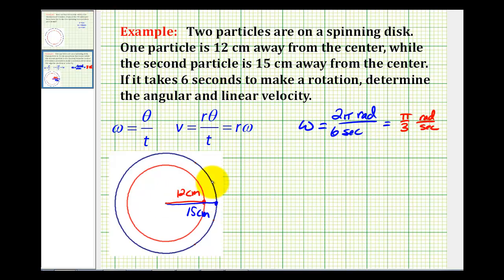So for the particle that's 12 centimeters away, the linear velocity will be equal to the radius, 12 centimeters, times theta, which is still two pi, and the time is still six seconds. Here the 12 and the 6 simplify. That would change to a 1. This would change to a 2. So the linear velocity for the first particle would be 4 pi centimeters per second.